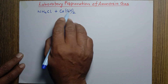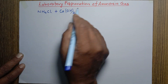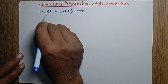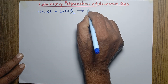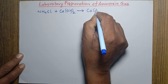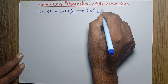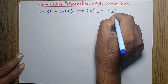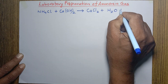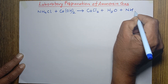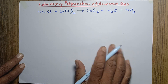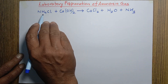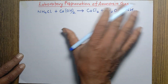When these two chemical substances are heated, they react with each other to form calcium chloride, water, and ammonia gas. Now we can balance this equation — hydrogen gives three on one side and four and two on the other, which are different.